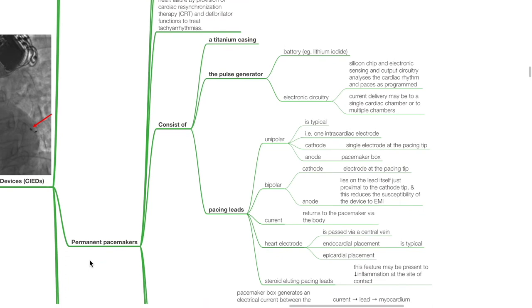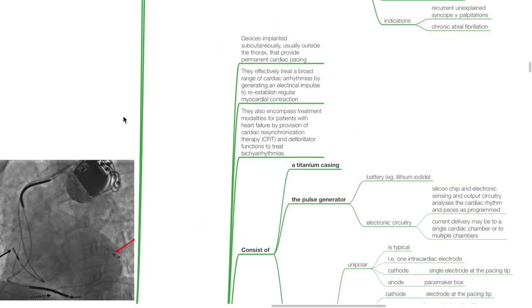Permanent pacemakers are devices implanted subcutaneously, usually outside the thorax, that provide permanent cardiac pacing. They effectively treat a broad range of cardiac arrhythmias by generating an electrical impulse to re-establish regular myocardial contraction. They also encompass treatment modalities for patients with heart failure by provision of cardiac resynchronization therapy and defibrillator functions to treat tachyarrhythmias.